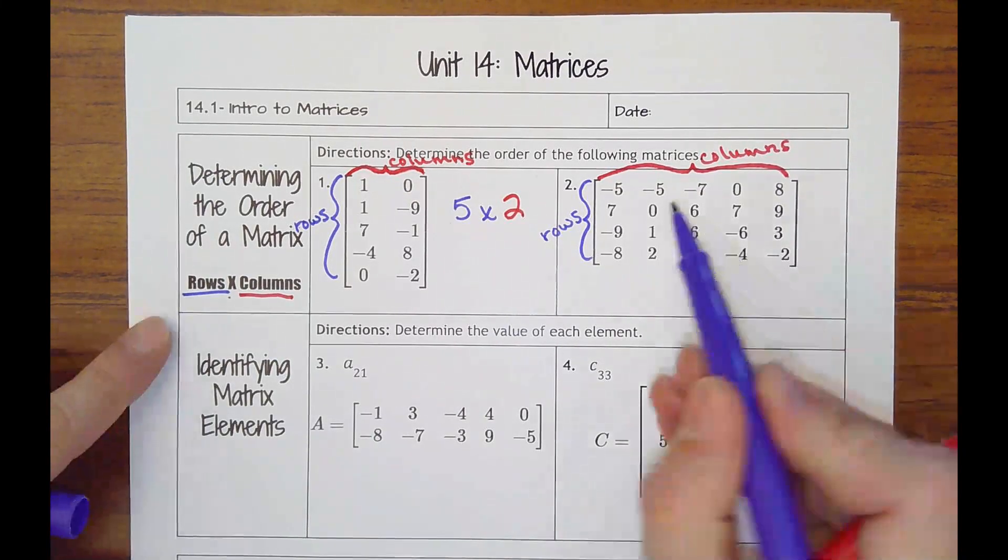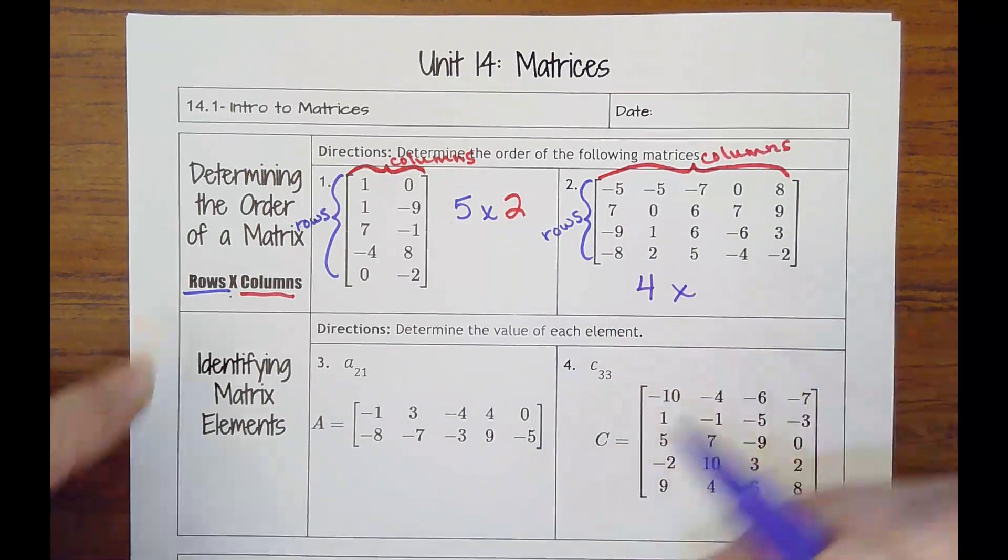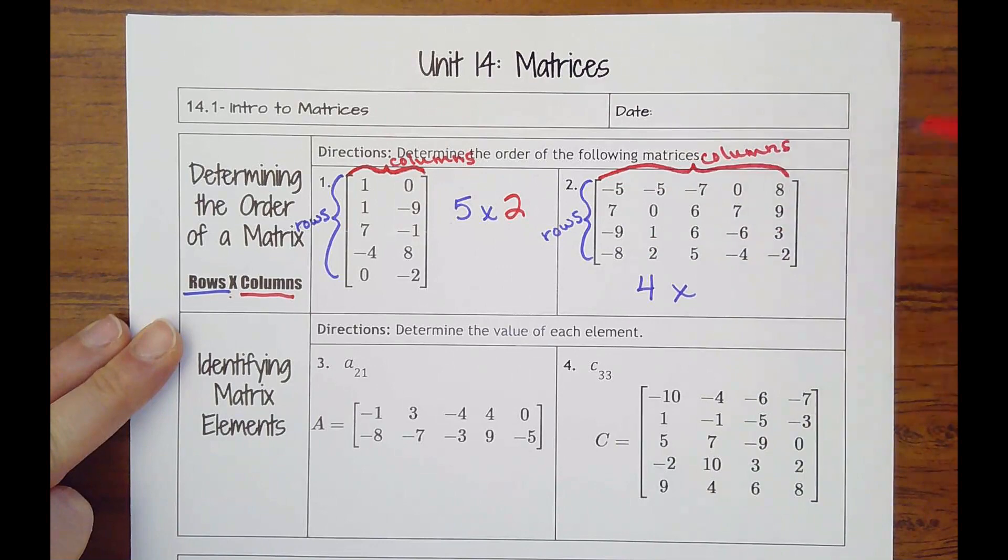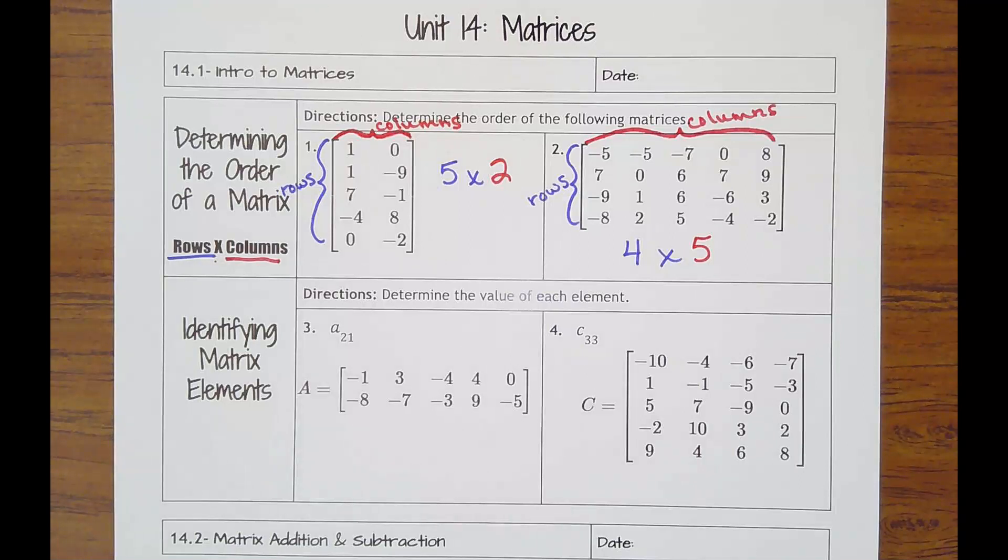And then the second one has one, two, three, four rows by one, two, three, four, five columns. So we would call it a four by five matrix.